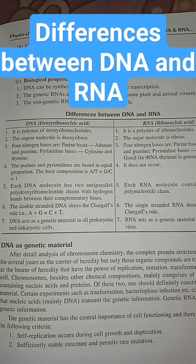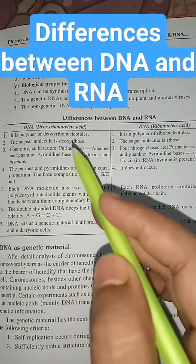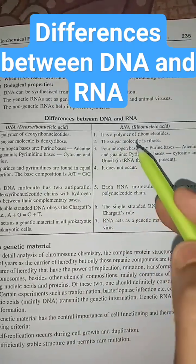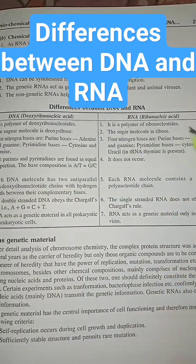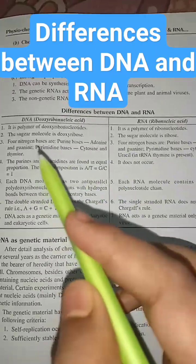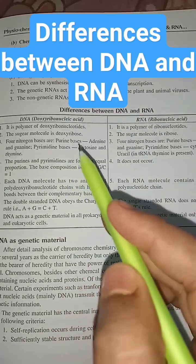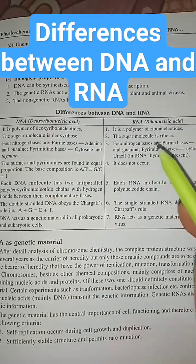Differences between DNA and RNA. DNA is a polymer of deoxyribonucleotides, but RNA is a polymer of ribonucleotides. The sugar molecule in DNA is deoxyribose; the sugar molecule in RNA is ribose.